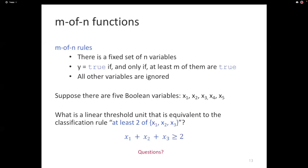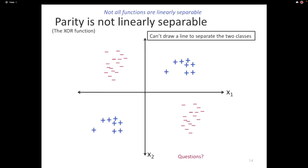So what have we seen so far? Boolean conjunctions are linearly separable. Boolean disjunctions are linearly separable. You can throw in negations — the recipe says any time there's a negation, replace it with (1 minus that variable). So conjunctions with negations, disjunctions with negations — all linearly separable. Is there a limit? It turns out there's a very simple function that is not linearly separable. Parity functions are not linearly separable. An example is XOR.